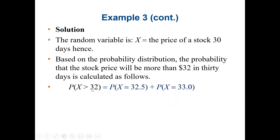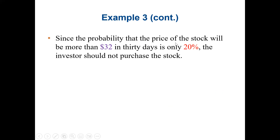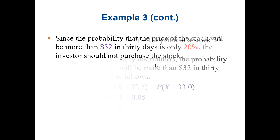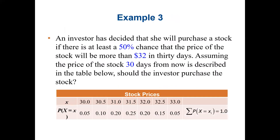The probability that X is greater than 32 equals probability of X=32.5 plus probability of X=33, which is 0.15 plus 0.05 equals 0.20. Since the probability that the stock price will be more than $32 in 30 days is only 20%, the investor should not purchase the stock. If the condition were more than $31, the probability would be about 0.65.